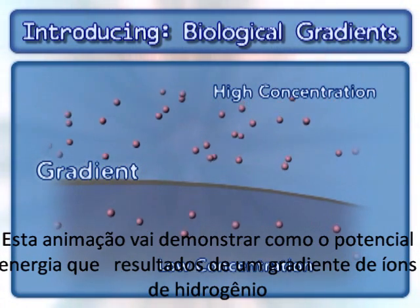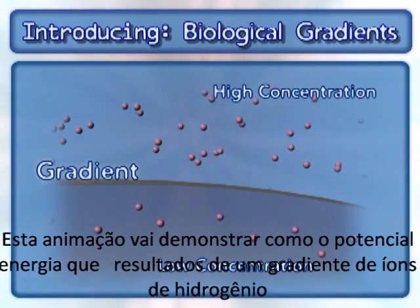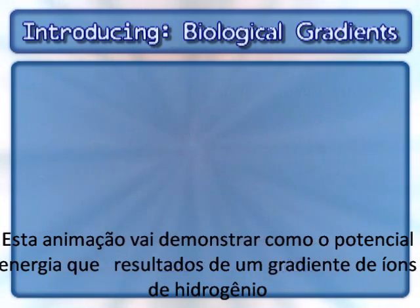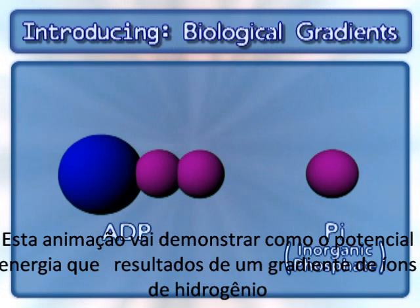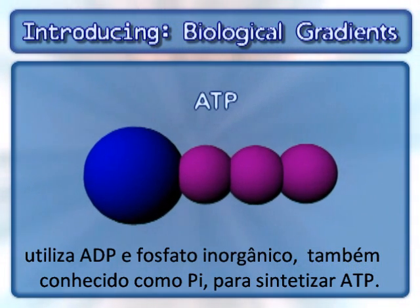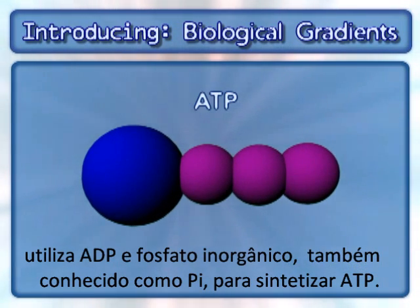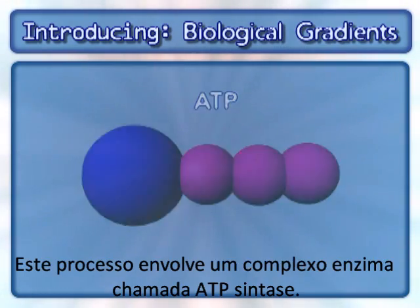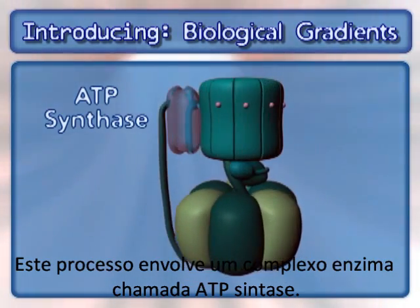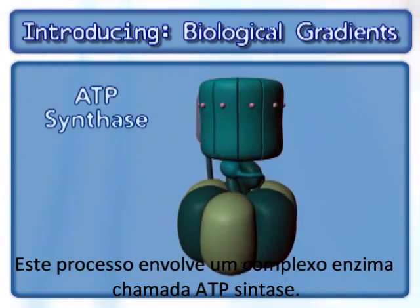This animation will demonstrate how the potential energy that results from a hydrogen ion gradient uses ADP and inorganic phosphate, also known as PI, to synthesize ATP. This process involves an enzyme complex called ATP synthase.